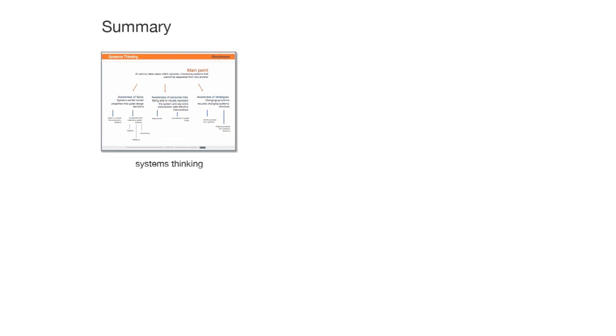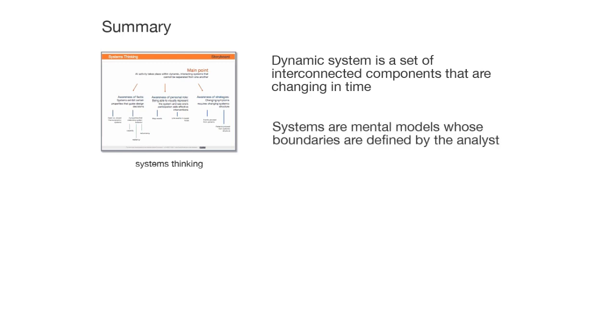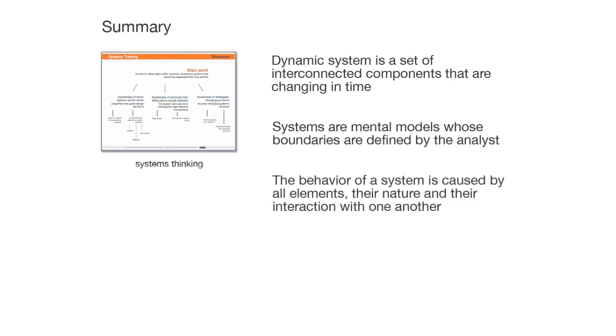Let's summarize. A dynamic system is a set of interconnected components that are changing in time. Systems are mental models whose boundaries are defined by the analyst. The behavior of a system is caused by all elements, their nature, and their interaction with one another.